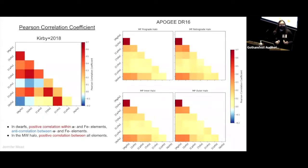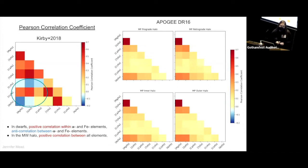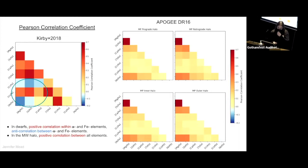We also looked at the Pearson correlation coefficient. For all the local group dwarf stars, we see a nice pattern: all alpha elements are positively correlated with each other, all iron elements are positively correlated with each other, and for the most part alpha elements are anti-correlated with iron elements — with the exception of cobalt, which is positively correlated. At low metallicities, cobalt is mainly formed in hypernovae, so it should track with alpha elements. But if you look at the APOGEE data, that pattern is absent — everything is positively correlated with everything else.